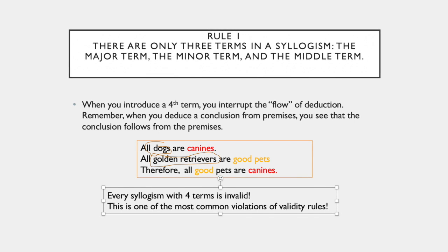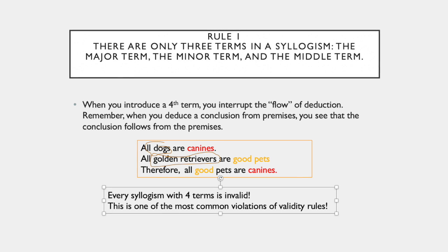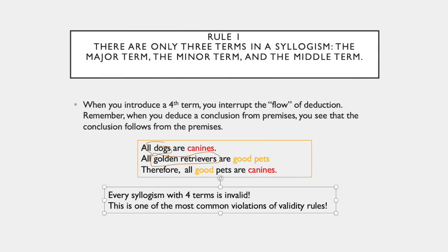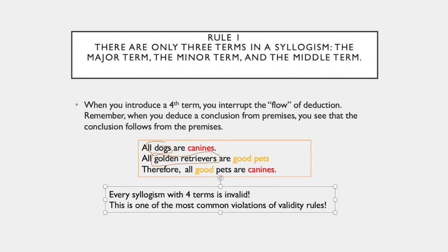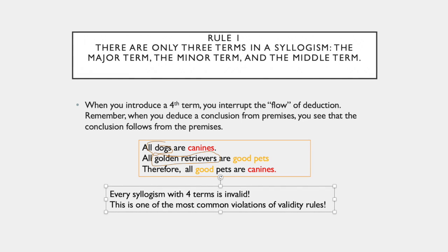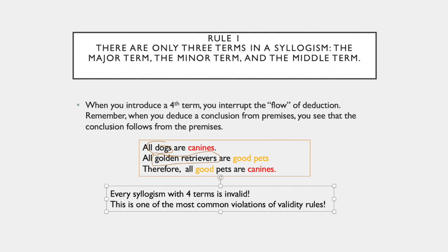When you introduce a term that is a fourth term, you interrupt the flow of deduction. Remember when you deduce a conclusion from premises, you see that the conclusion follows from the premises.